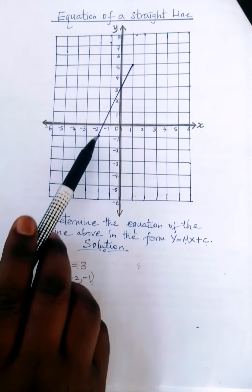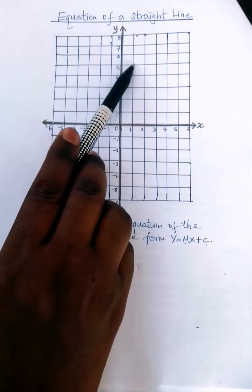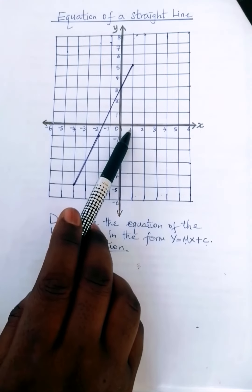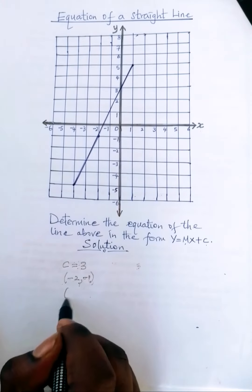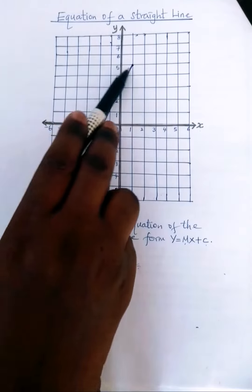And another point could be anywhere. We have this point here. We have x is 1, and y is 5.